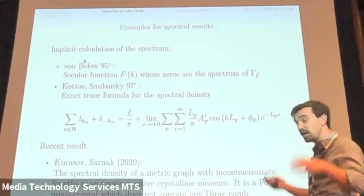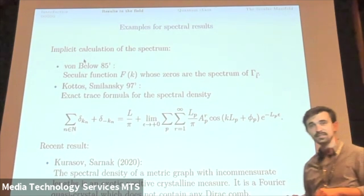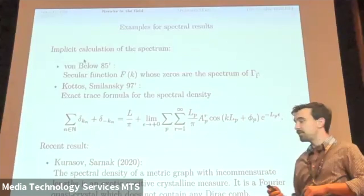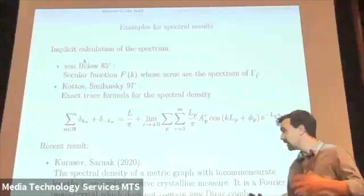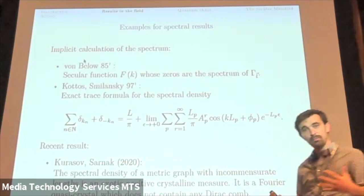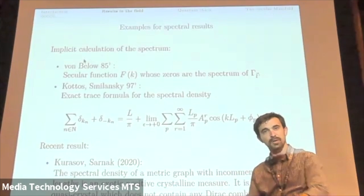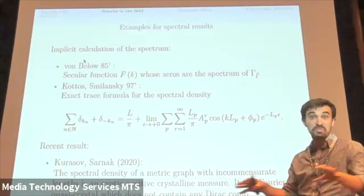Some state of the art result, and I'm going to do some name dropping here, but Kurosov and Sarnak recently showed that for metric graphs with incommensurate edge lengths, this means that the edge lengths are independent over the rationals, the spectral density is going to have exotic properties. It is always a positive tempered measure, but it's going to have exotic properties of such a measure. It is Fourier quasi-crystal and it does not contain any Dirac comb, meaning that there are no arithmetic progressions inside the spectrum. This is if I assume that the graph is simple, otherwise there are, but I'm not going to discuss it. This answered several open questions in the field.